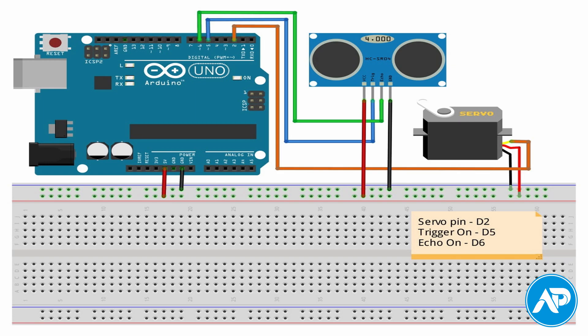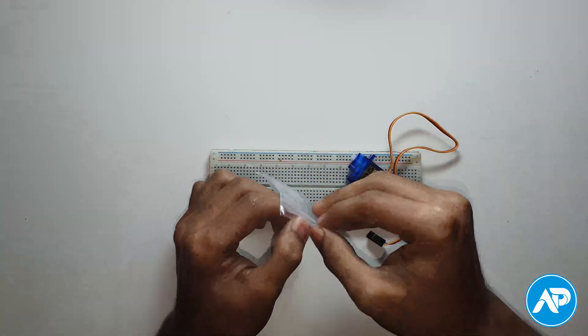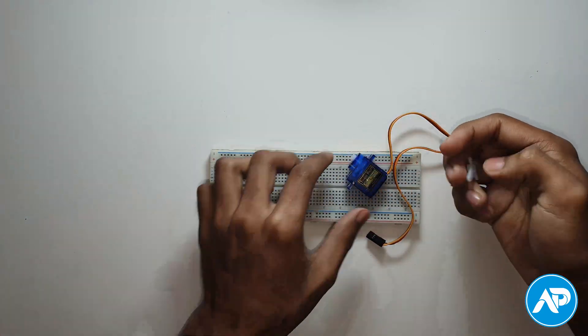Here is the circuit schematic diagram you need to follow. Let's set up the components. First take a breadboard, then take a servo motor and connect a servo horn on it.